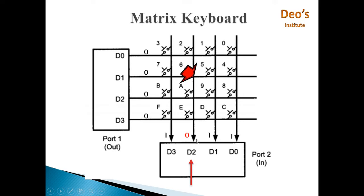Now next job is to identify a particular row from which the key is pressed. Now we identified the column, but now we have to identify the row.